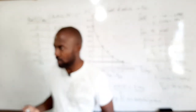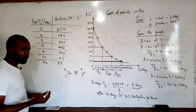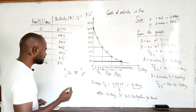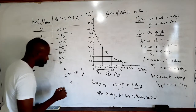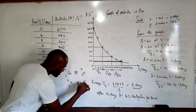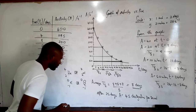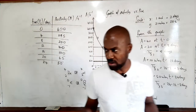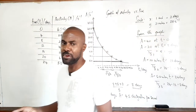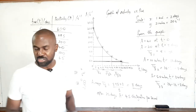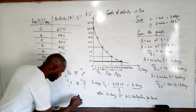The second type is beta particle emission. A beta particle is essentially a fast-moving, high-speed electron, represented as E with mass zero and charge minus one, or β with subscript minus one and superscript zero. The third type of radioactive emission is a gamma ray, symbolized by the Greek letter gamma.